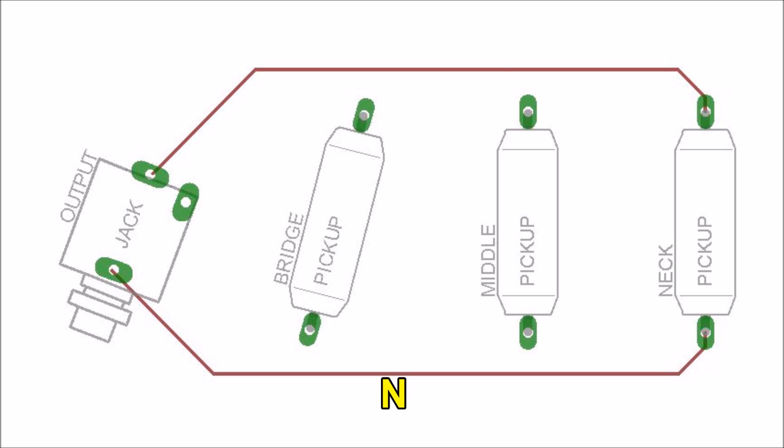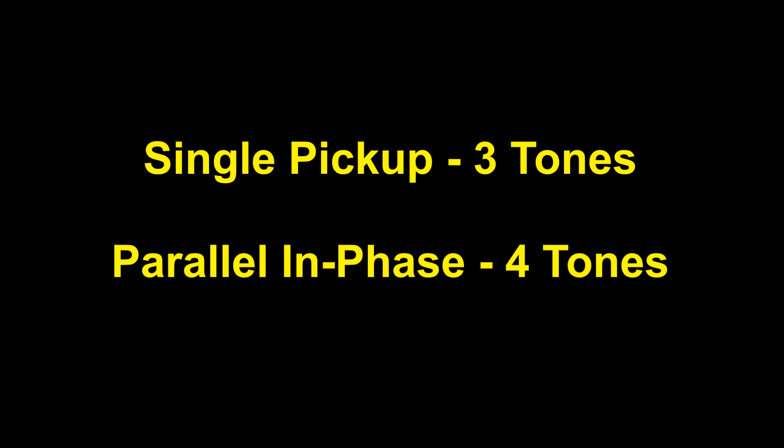N - Neck pickup; M - Middle pickup; B - Bridge pickup; R - Prefix for reverse phase connection. Vertical line between pickups: pickups connected in parallel. Horizontal line between pickups: pickups connected in series. Parenthesis: grouped connection of pickups in a compound combination of connections.